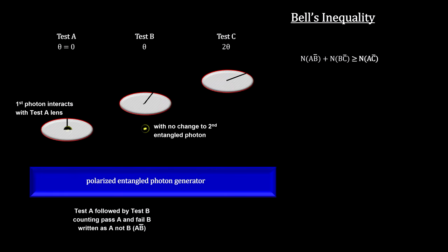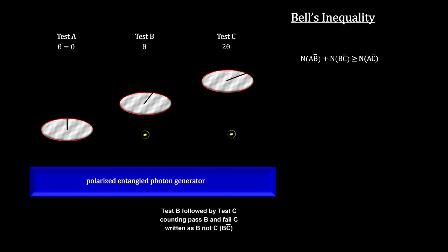Remember that our assumption is that the states of the entangled particles depend only on their original hidden variables. It cannot change just because there was a measurement taken on the other particle.